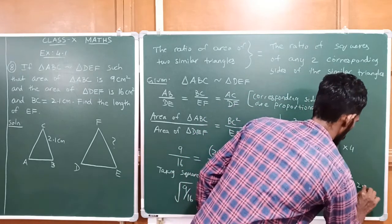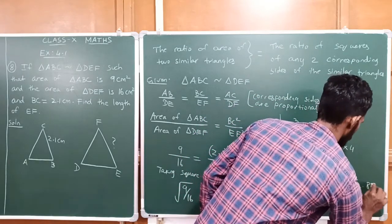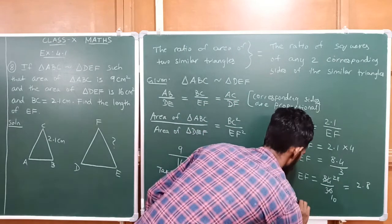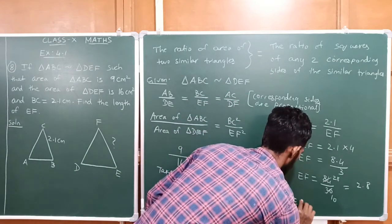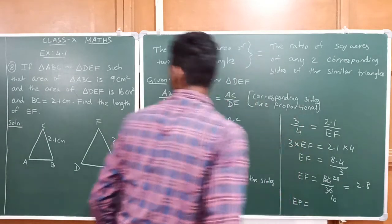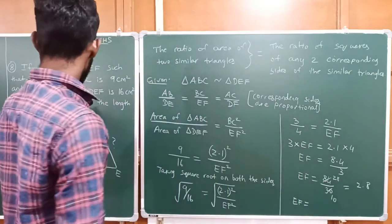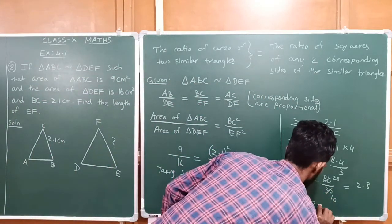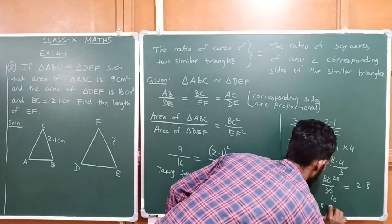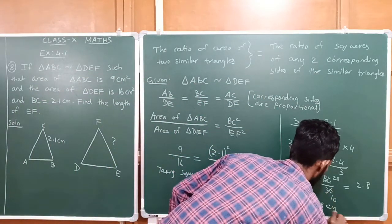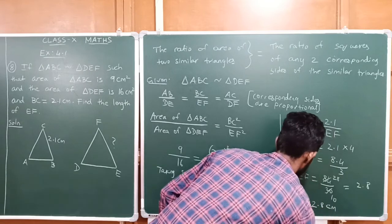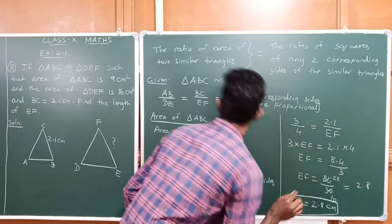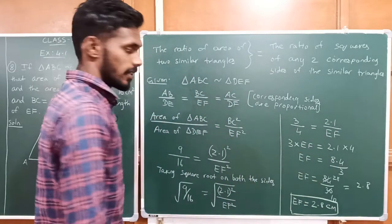It becomes 2.8, since 28 by 10 gives 2.8. So EF is equal to 2.8 centimetre. This is the solution for question number 8.